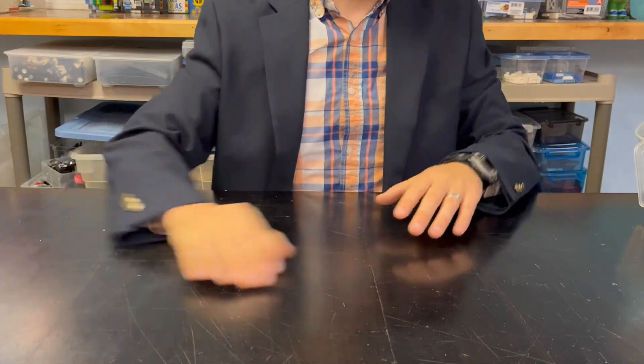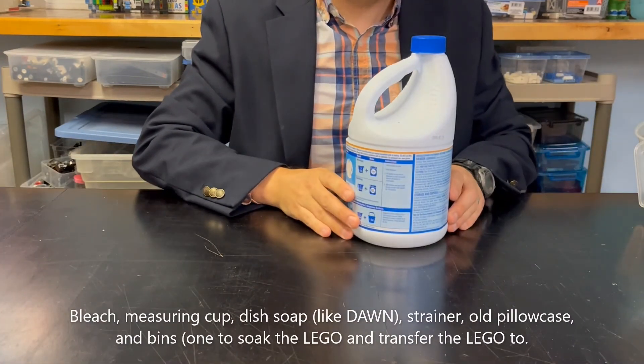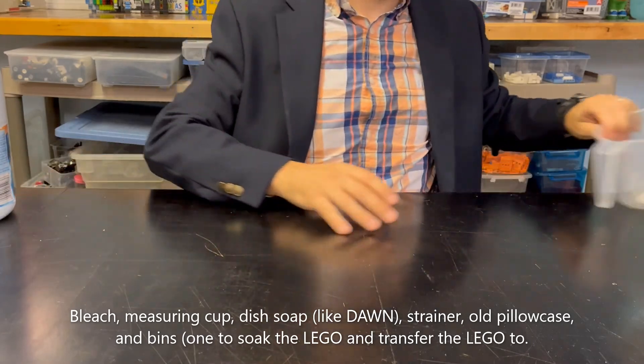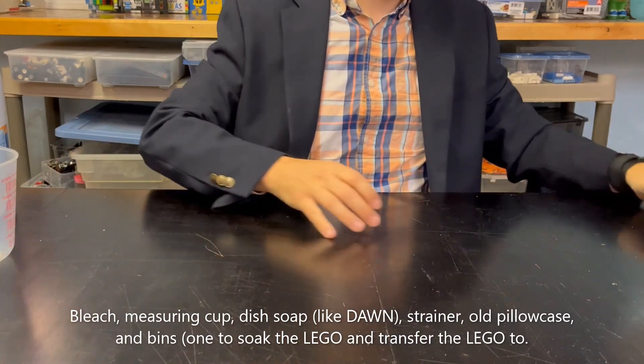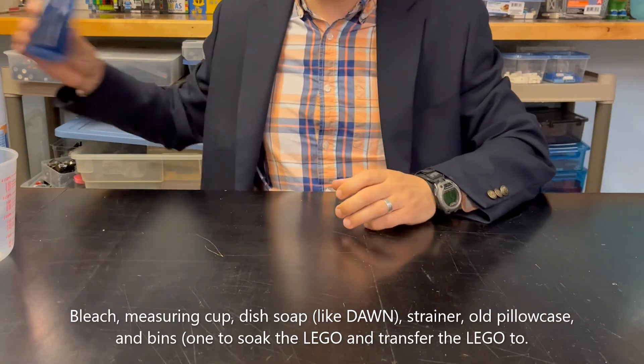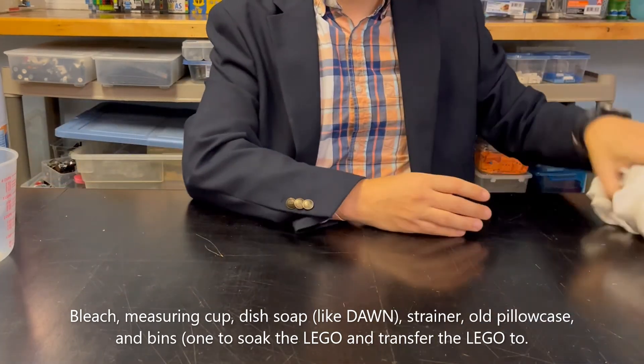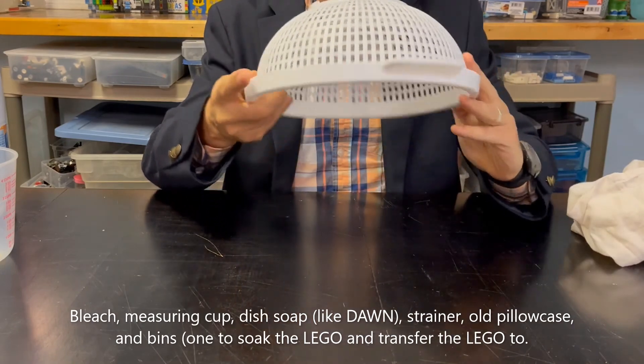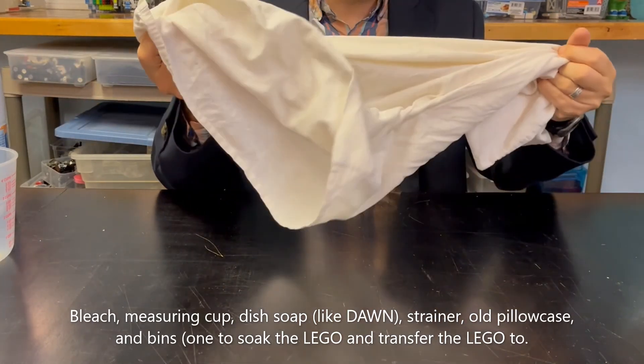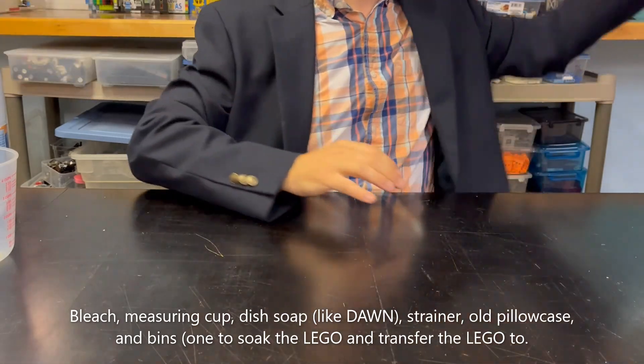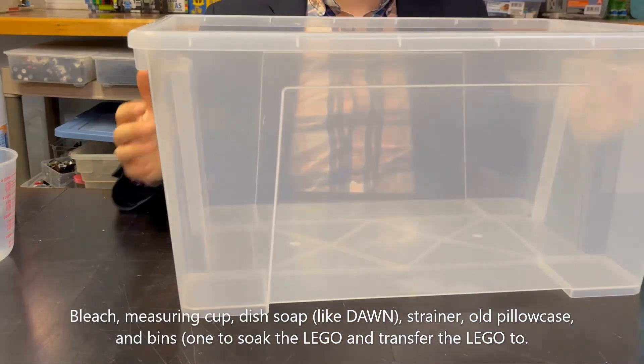What we'll need for this is some bleach, a measuring cup to measure the bleach, some blue soap, a dollar store strainer, an old pillowcase, and two bins.